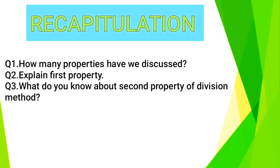Now, recapitulation time. Question number 1: How many properties have we discussed? Yes, 2 properties. Question number 2: Explain first property. First property is that if a number is divisible by another number, then the former number is divisible by all factors of the latter.